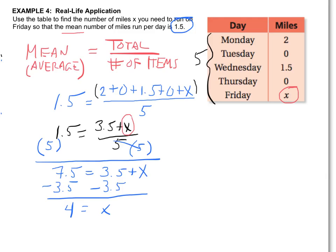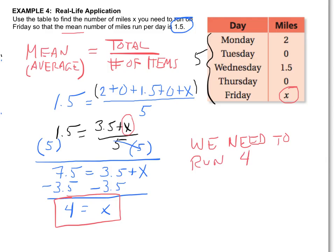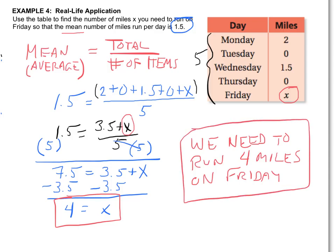So my answer is 4. We don't want to leave it as X equals 4 — we want to say that we need to run 4 miles on Friday. That answers the question with the correct labels. These problems are going to get more complicated as we go, but the key is: use PEMDAS when we have all numbers on both sides, or SADMEP when solving for a variable. We work PEMDAS backwards and use inverse operations to move numbers away from the variable until we reach our final answer.